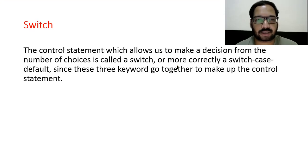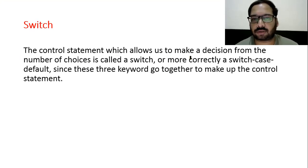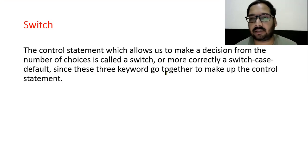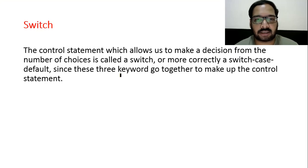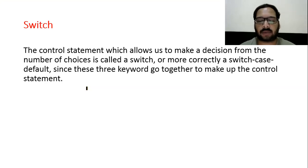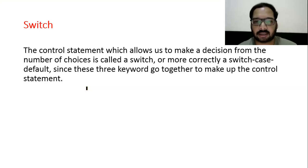Structure is a constructed data type used to store elements of different types together under a single name. You may be asked the difference between array and structure: in an array, similar values of the same type are stored in one variable, whereas in a structure, different types of values can be stored in one variable. Switch: the control statement which allows us to make a decision from a number of choices is called switch, or more correctly switch-case-default, with three keywords: switch, case, and default.